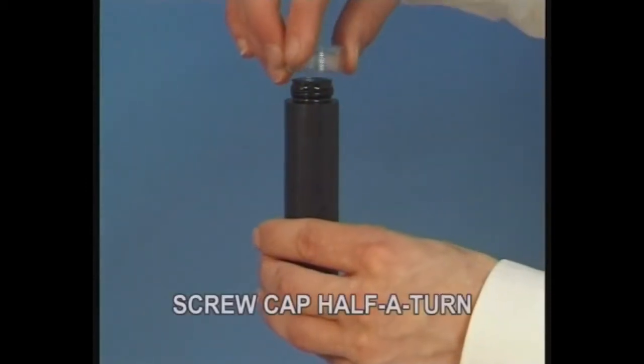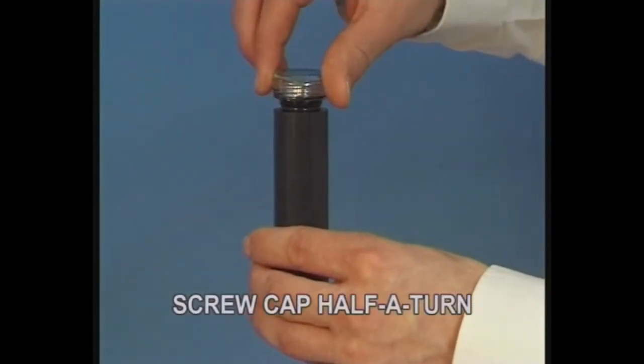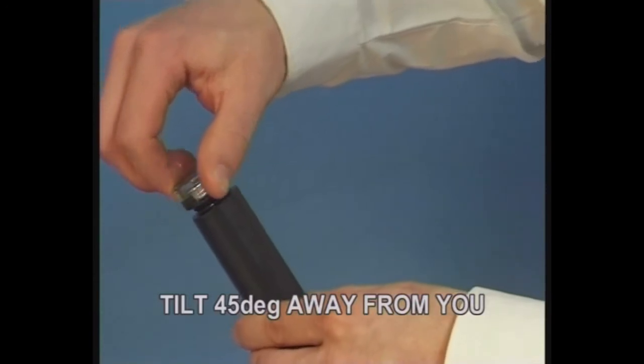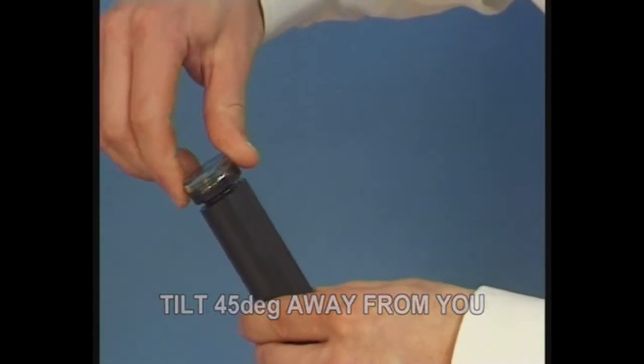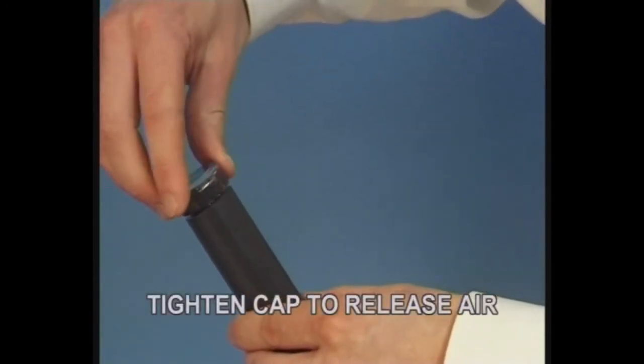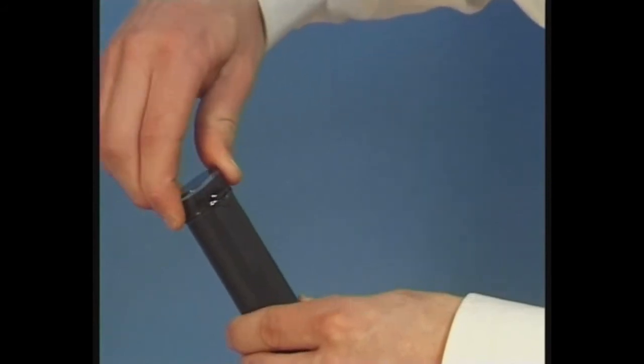Screw the end cap on half a turn. Tilt the tube away from you at an angle of 45 degrees. Tighten the cap in this position to ensure all the air is expelled.